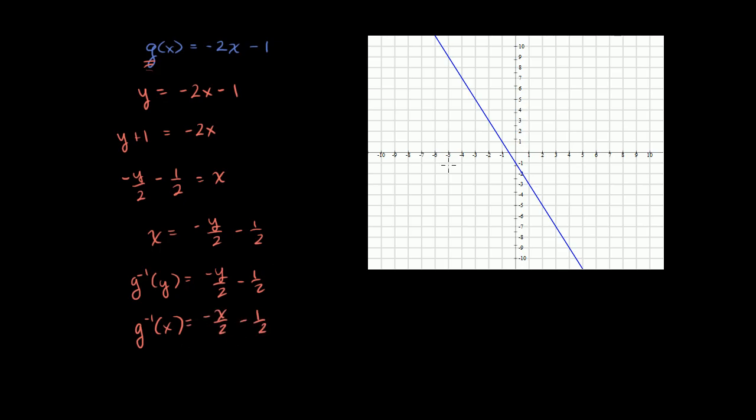Now let's graph it. Its y-intercept is negative 1 half. So it's right over there. And it has a slope of negative 1 half.